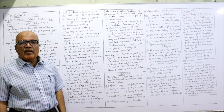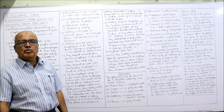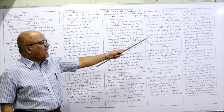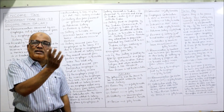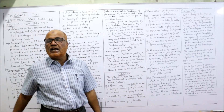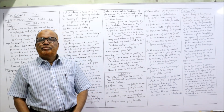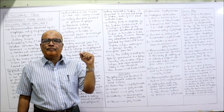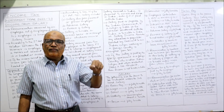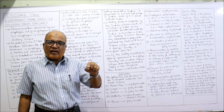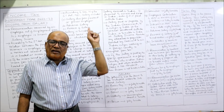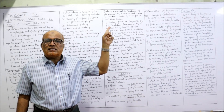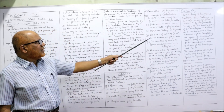Advanced salary received is fully taxable. Arrears of salary, if not taxed earlier: if arrears of salary are received during the current year for a prior year and were not taxed in that prior year, now they will be taxable.